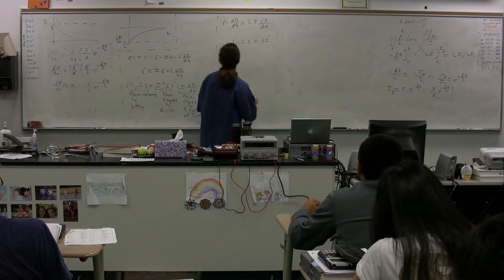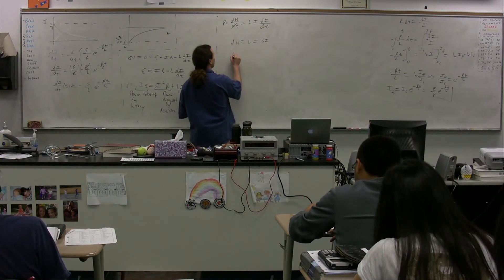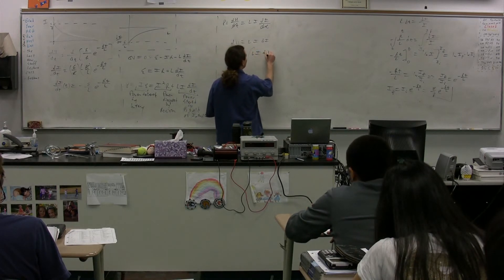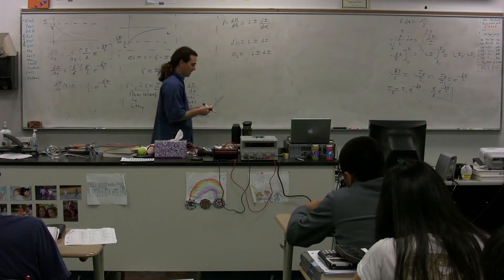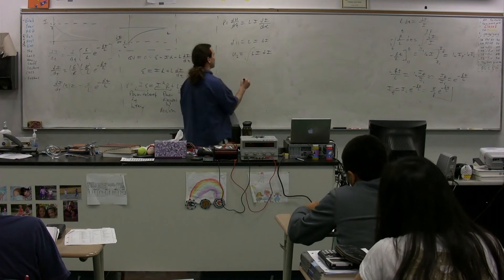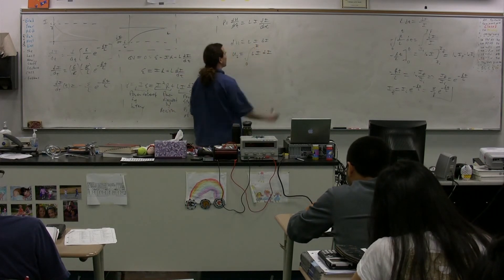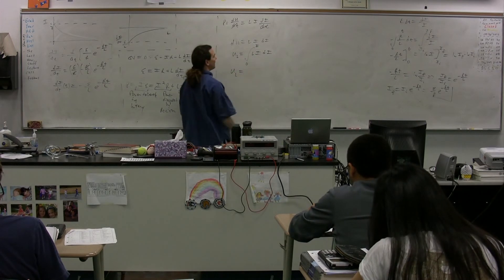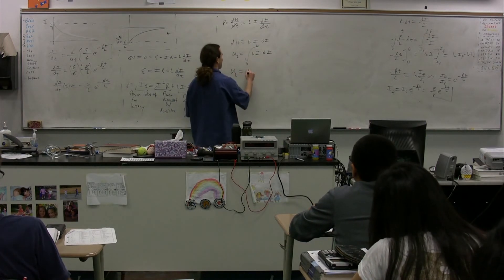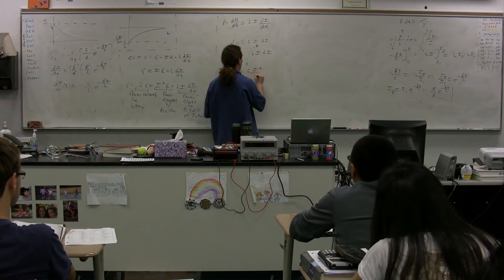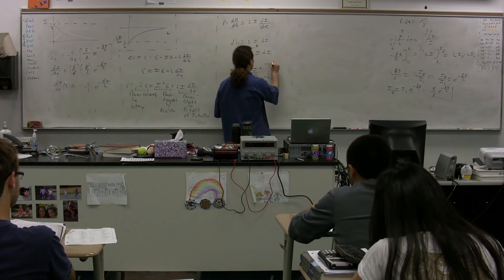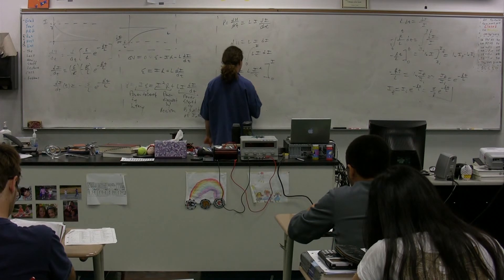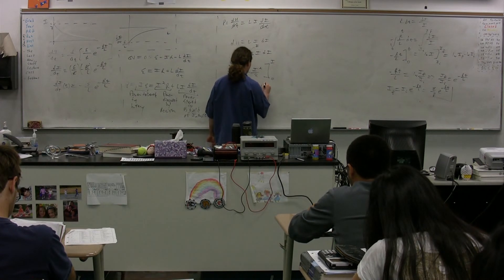Take the integral of both sides. We get that the energy stored in an inductor is equal to the integral of Li di. Well, this is going to be from zero to whatever current we're talking about. So the integral of Li, L is just a constant, so we have L times i squared over 2 from zero to i, so the energy stored in an inductor is equal to one-half Li squared.